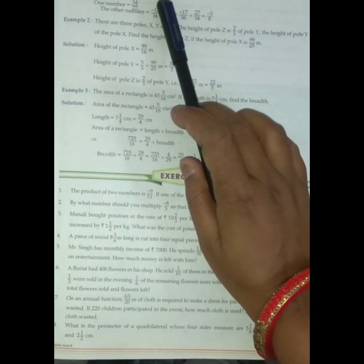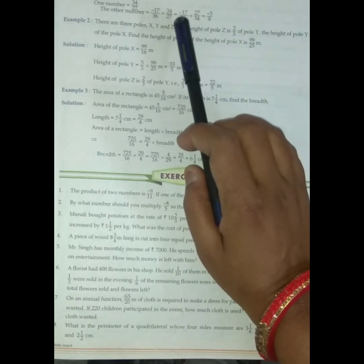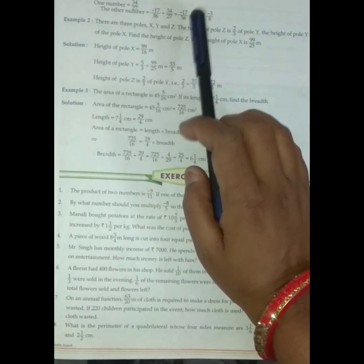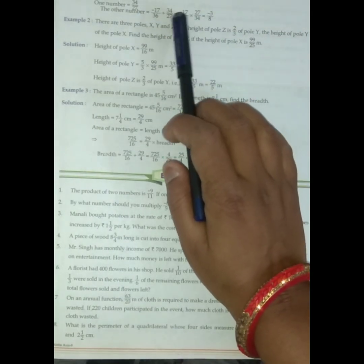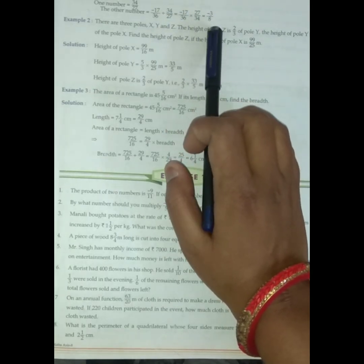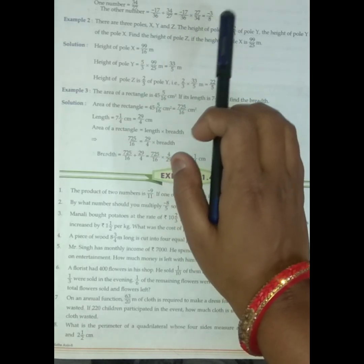Now please take out page number 21. See here student, one number is 34 by 27 and the other number is... so kya hooga. Minus 17 by 36 divided by this one. Then we will reciprocal the statement. It becomes 27 by 34. Then our answer is minus 3 by 8. Got it student?